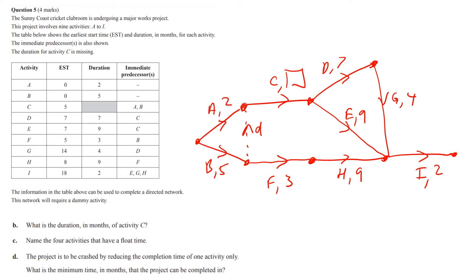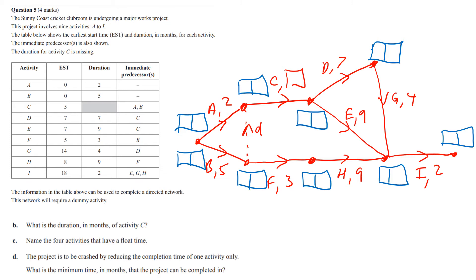I've redrawn the network diagram and now I need to add the EST boxes. I'm putting these in blue to contrast with the red. At the start, EST for A is 0, EST for B is 0. C has an EST of 5. D has an EST of 7. E has an EST of 7 — that makes sense because they're both starting from the same point. F has a starting point of 5. H has an EST of 8, because 5 plus 3 equals 8.